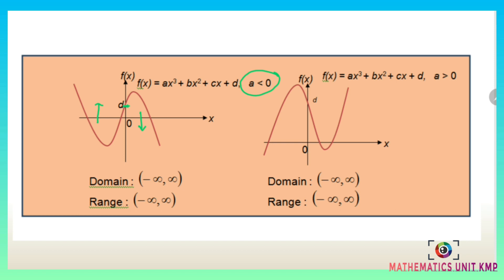For the second function, if f(x) equals ax³ plus bx² plus cx plus d and a is greater than 0, the inflection point is at d. At the right it is concave up and at the left it is concave down.